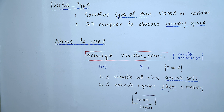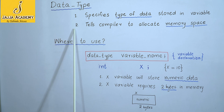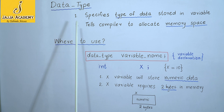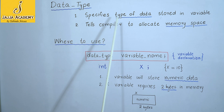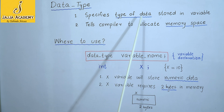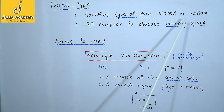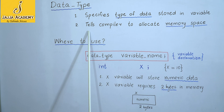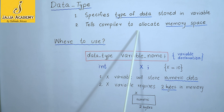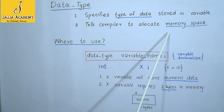Let's define data type. Data type provides two types of information. Number one, it specifies the type of data that can be stored in a variable. Number two, the data type tells the compiler to allocate memory space for a variable.